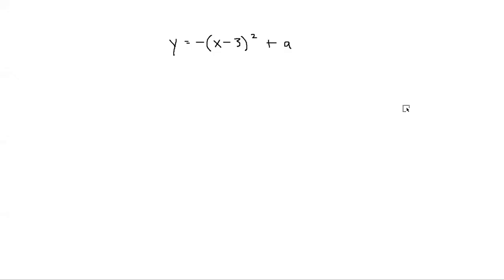Question 19 gives us this quadratic equation and then asks us for a true statement about the graph of the equation. Because this is a quadratic equation, we know for sure that the graph is a parabola.